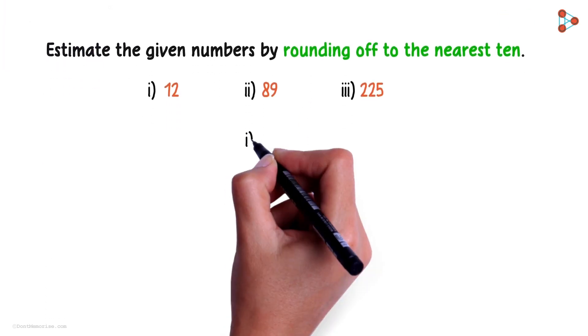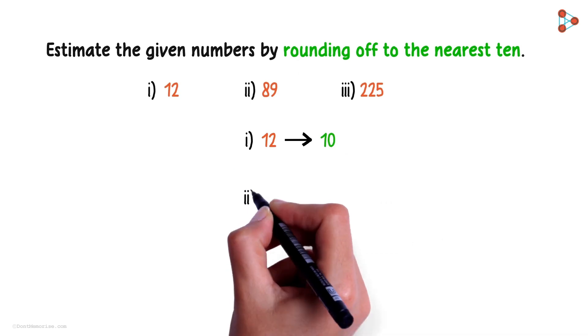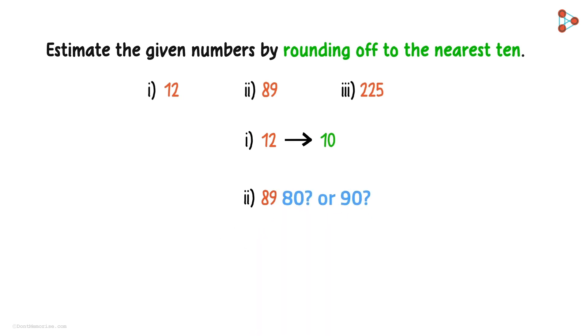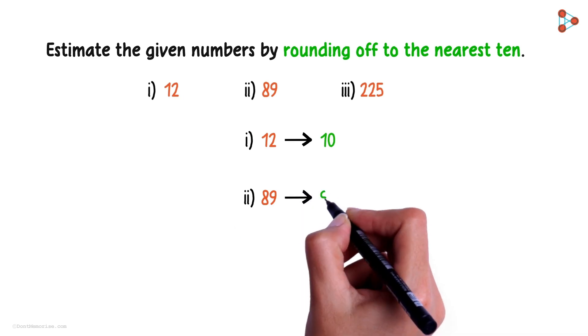Well, the nearest multiple of 10 to the number 12 is 10. That's right! So 12 is rounded down to 10. What about 89? Should it be rounded to 80 or 90? The nearest multiple of 10 to the number 89 is 90.